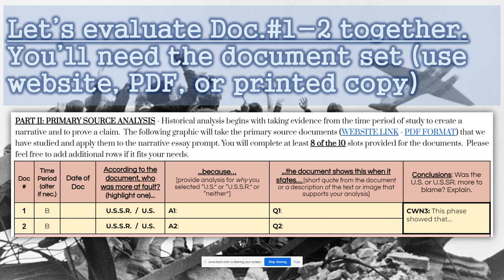We're going to start by evaluating documents number one and document number two. Go to the website to find the documents, take the documents that have been given to you, or go to the PDF that is provided. Within the scope of the narrative essay, you need to use at least eight documents to support your argument. You'll do ten today, but you need at least eight in your narrative essay.